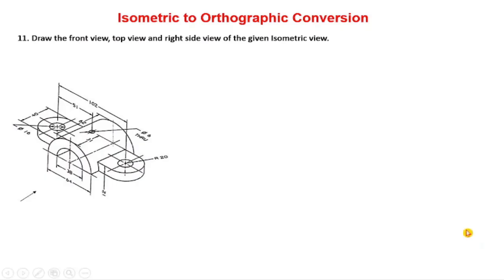Problem number 11. Draw the front view, top view and right side view of the given isometric view. If you observe, it will also represent the front view. The front view is a semicircle and total length.